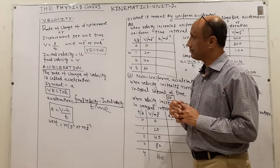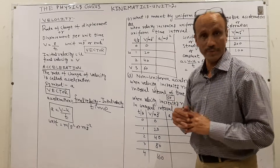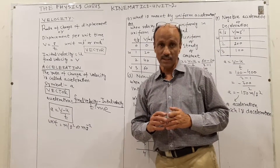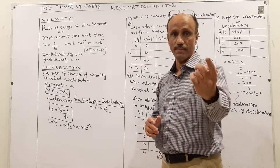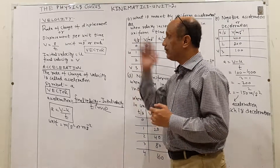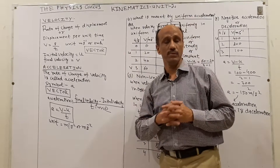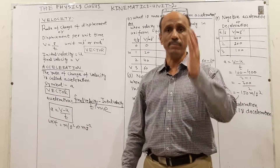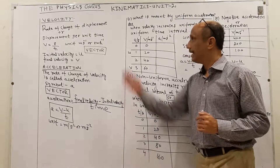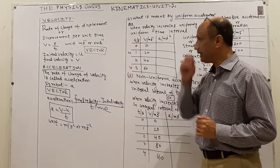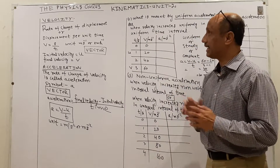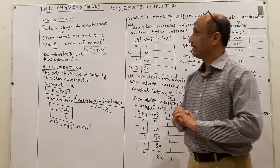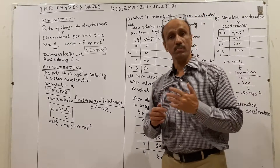Another definition of velocity is displacement per unit time. The symbol for velocity is v, distance is represented by s, and time by t. The unit for speed and velocity is the same: meter per second. The SI unit is meter per second, and another unit is kilometer per hour.